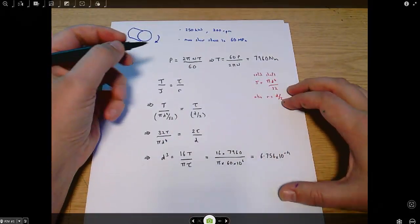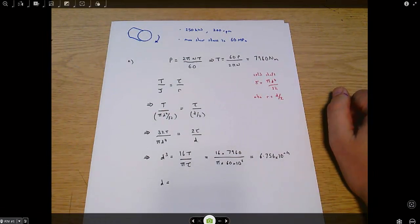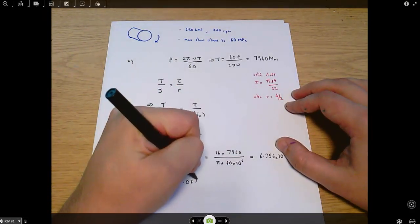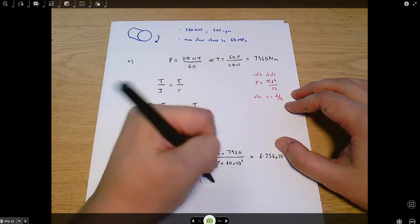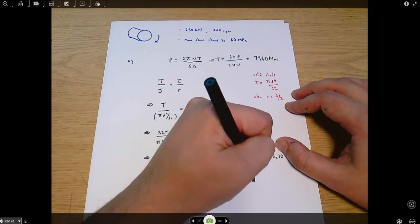Which comes out to be 6.756 times 10 to the minus 4. And then that means d equals - and here you need to know how to do a cube root on your calculator, so check that you can find that button - it's 0.0877 metres, which is 87.7 millimetres.